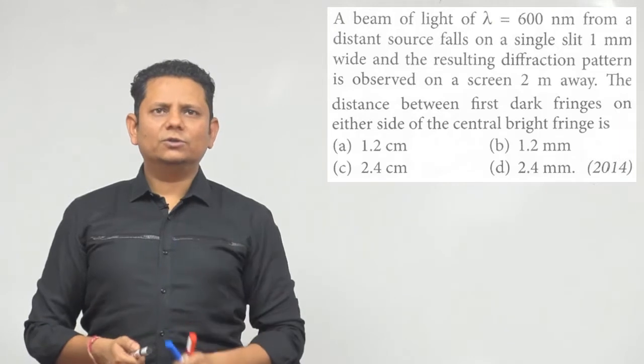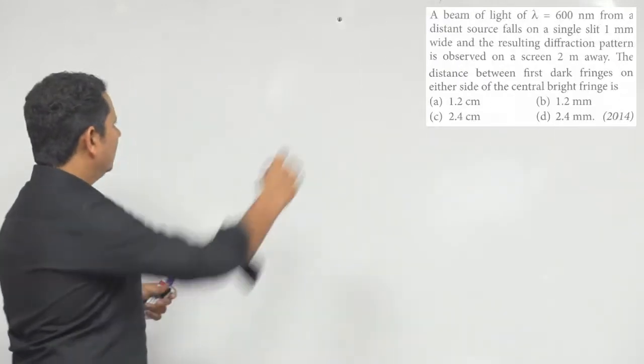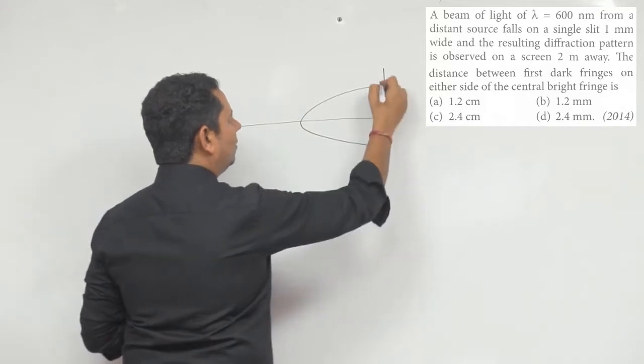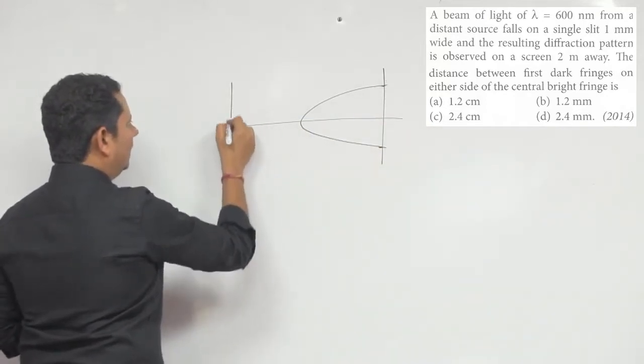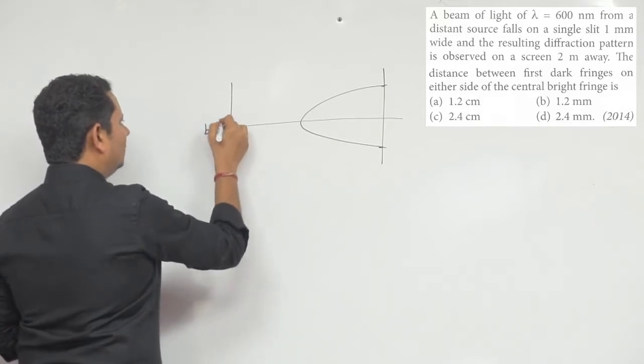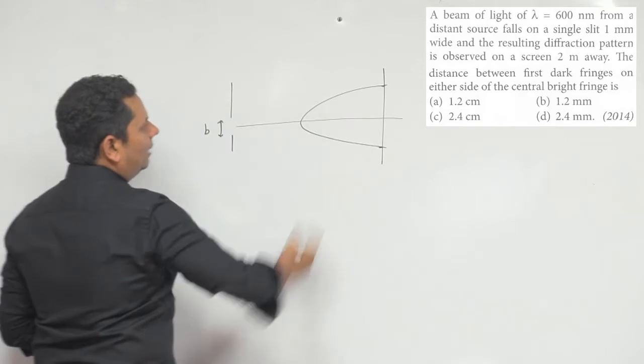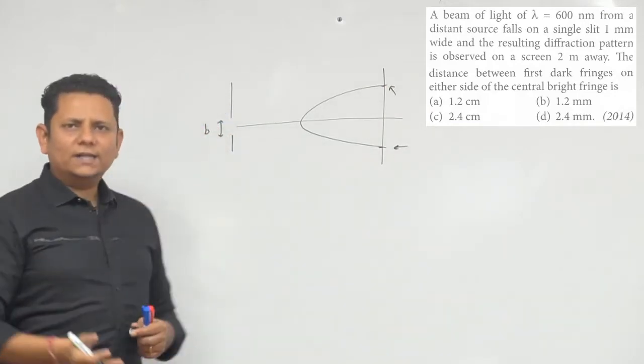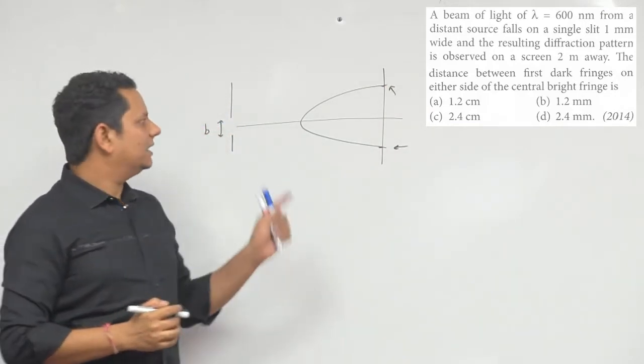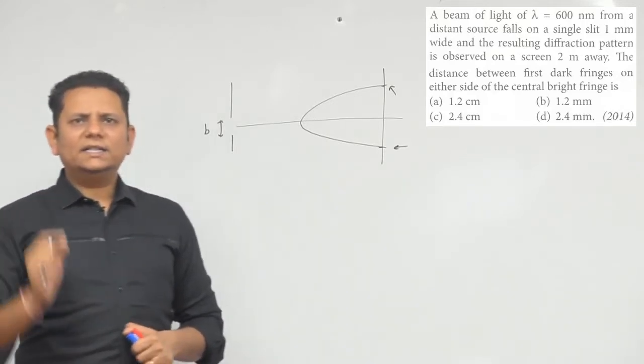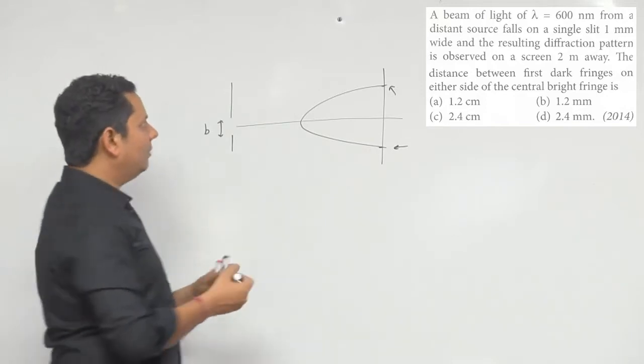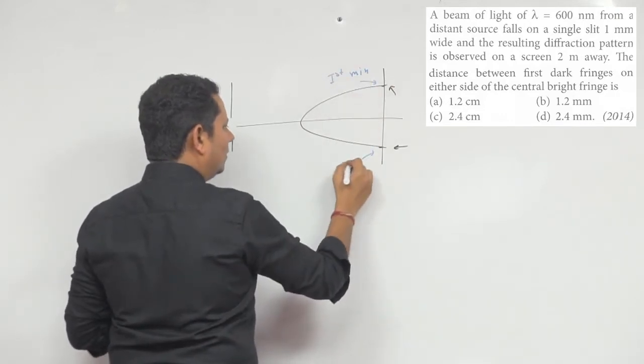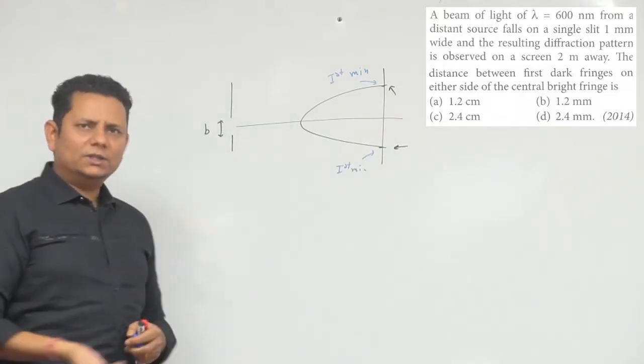It's a single slit pattern. You have the central maxima, and the distance to check is actually from this point to this point - the distance between the central maxima. Because when we talk about the distance between first dark fringe on either side, so this is a minima, this is a minima, first minima and this is a minima, actually this is a minima.